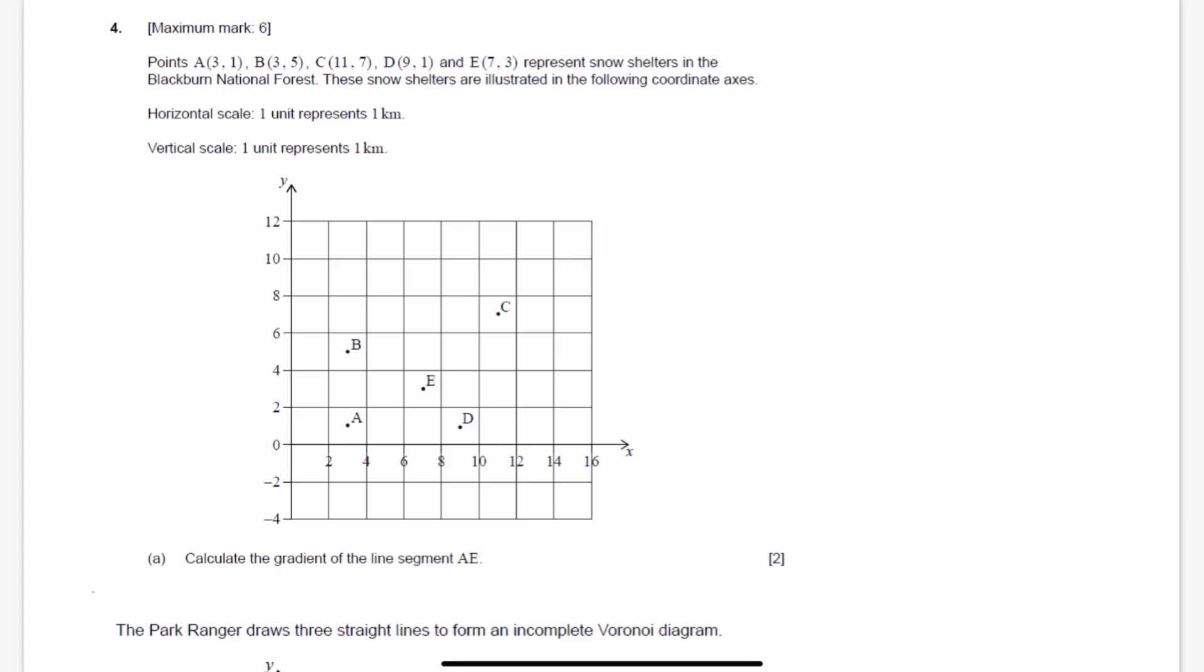Question number four. Points A, B, C, D, and E represent snow shelters in the Blackbird National Forest. These snow shelters are illustrated in the following coordinate axes. Calculate the gradient of line segment AE.